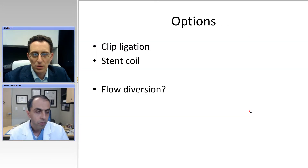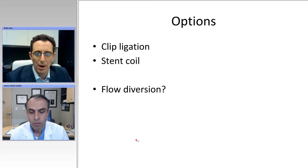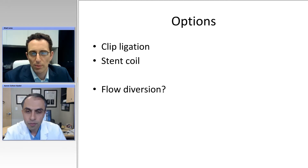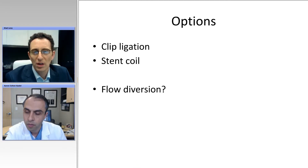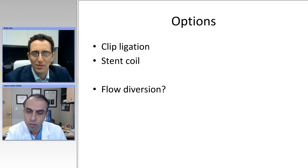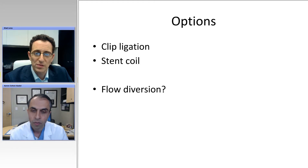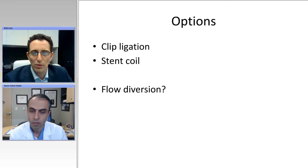Once we see this, we want to understand more and we begin our treatment strategies and paradigm. We would entertain clip ligation; however, in such a fusiform dissecting type aneurysm, we feel that that is not optimal and really not feasible. We also discuss stent coiling or endovascular techniques. However, in the setting of a ruptured aneurysm and subarachnoid hemorrhage where the patient will likely require ventriculostomy, extensive ICU care with invasive lines, we tend to avoid the use of stents or flow divertors due to the need for Plavix.